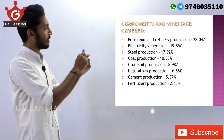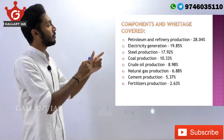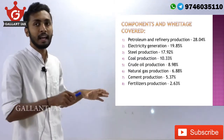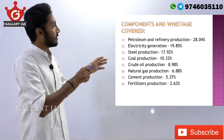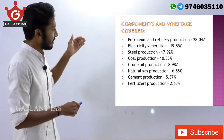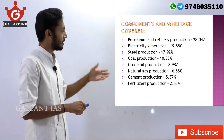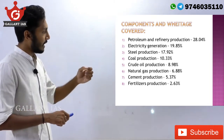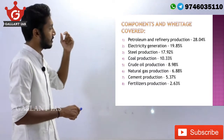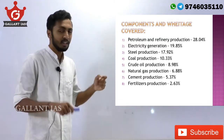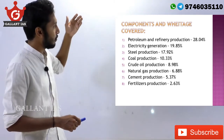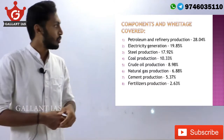Petroleum and refinery production is the industry with maximum weightage — 28.04% is given to the petroleum industry. Electricity industry with 19.85% weightage comes second, steel industry third, coal with 10.33% fourth, crude oil 8.98%, natural gas 6.88%, cement 5.37%, fertilizers 2.63%. Try to memorize the 8 core industries in increasing order of weightage — it is very important.